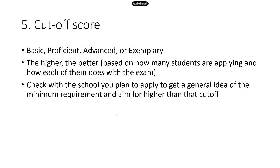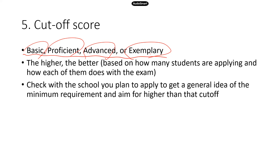A lot of students are eager to know what the cutoff score is. TEAS scores are put into four categories: basic (the lowest), then proficient, advanced, and exemplary. The higher the score the better, because that will make you more competitive. There are a lot of factors in play — for instance, how many students are applying and how each of them does on the test. If a lot of students apply and everybody does really well, the score needed to get into the program might be much higher than the minimum required.